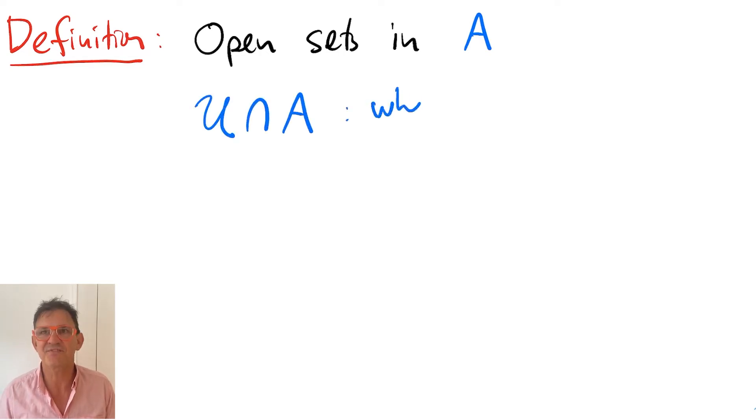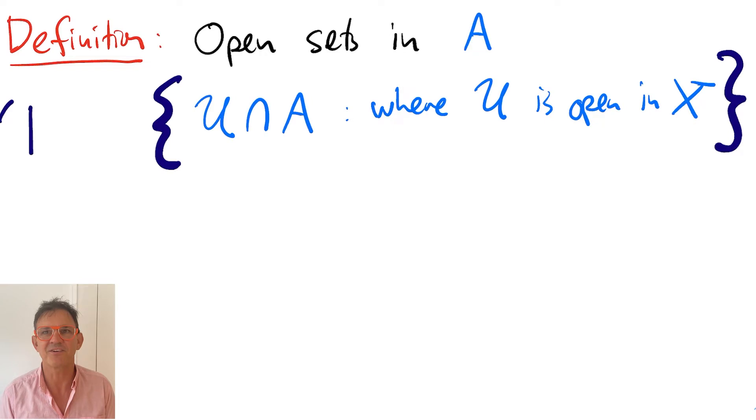The collection of these sets defines a topology. It should be checked that it is a topology, called the subspace topology. I'm denoting it here with tau subspace.